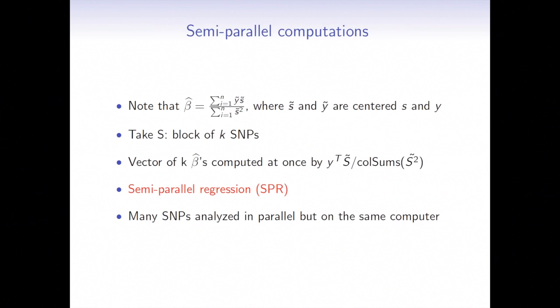And now comes the idea of semi-parallel computations. So in the formula on the previous slide, we've seen that what is actually happening is that we have to center our vector of response y, and center our SNP. And then what's happening is that the y part, the response stays the same. So I'm only changing my SNP.